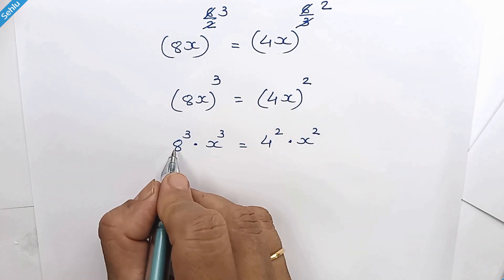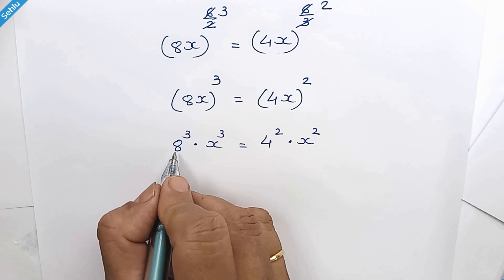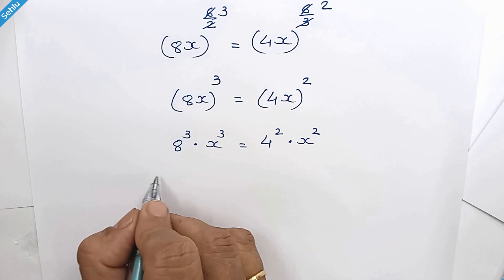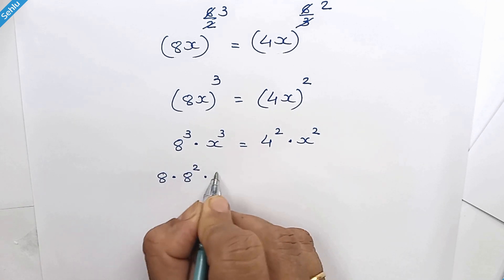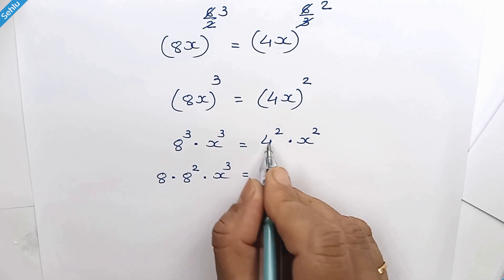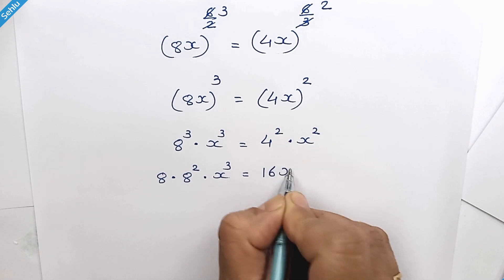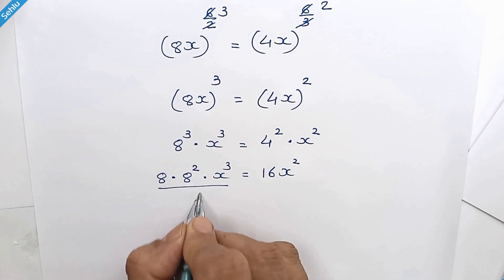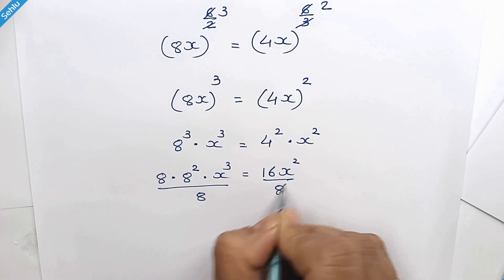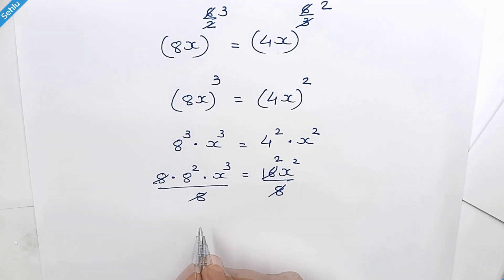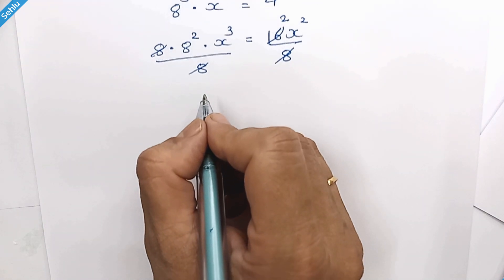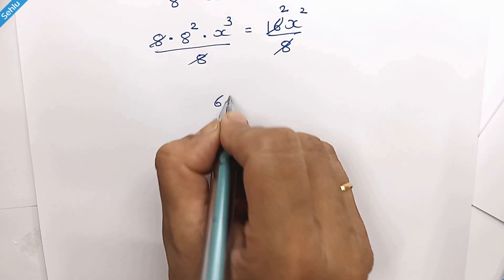What is 8 cube? It's 512. But if you don't know, no worries. It can be written as 8 times 8 square. And 4 square is 16. Divide by 8 both the sides. Here we have 2 and these 2 get cancelled out. Now we have 8 square is 64.